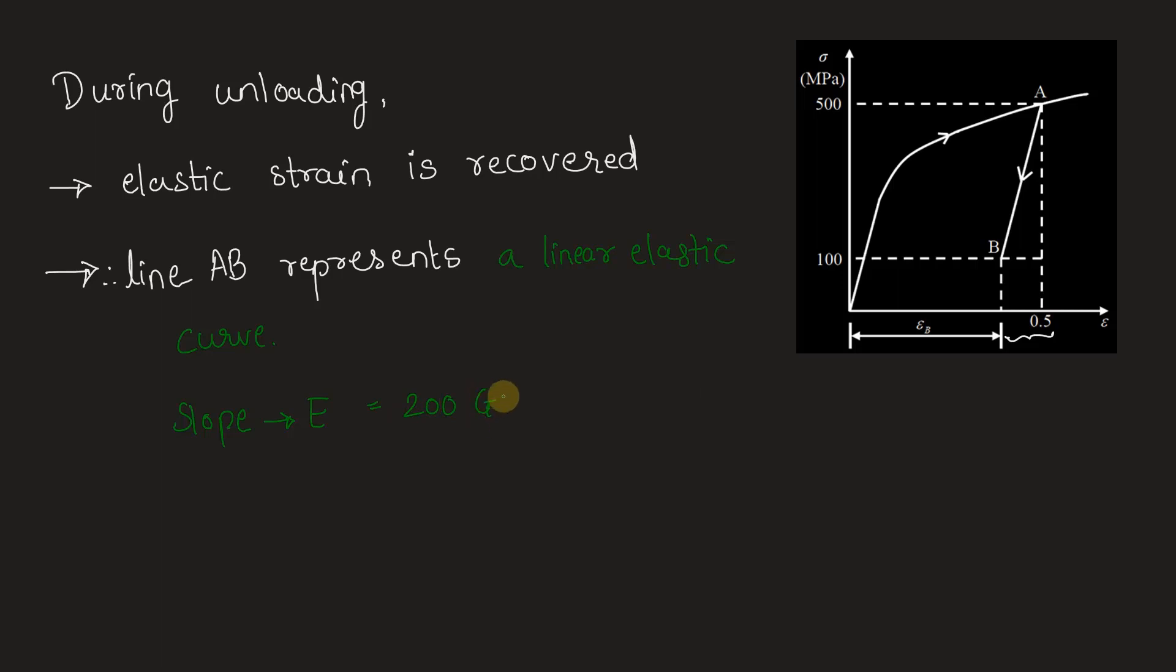Expressing this in MPa, because the stress values are given in megapascal, we represent this as 200 × 10³ MPa. If we calculate the slope from the graph, slope of line AB, we have (500 - 100) MPa on the y-axis (the stress values) divided by the strain values on x-axis: (0.5 - εB). This is unitless, so we get 400/(0.5 - εB).